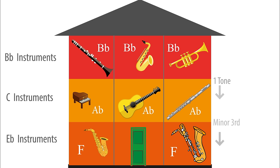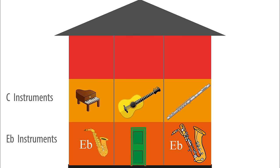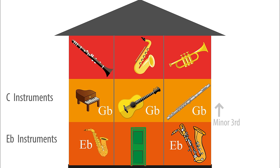Now, if the Eb saxes play an Eb, the C players — flute, guitar and piano — will need to play a minor third above this Eb, which is Gb. And the Bb people? They will need to play a tone above Gb, which is Ab.